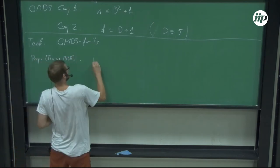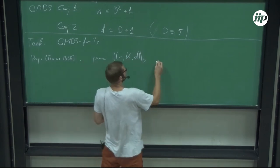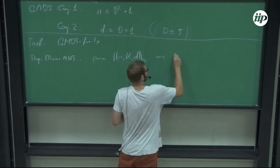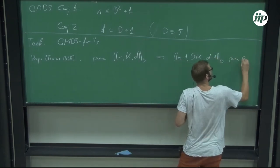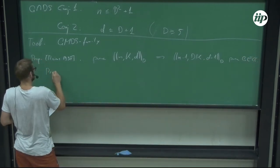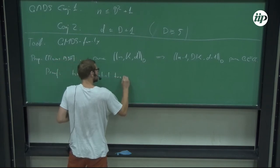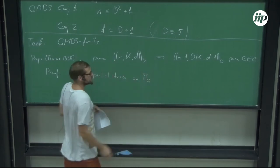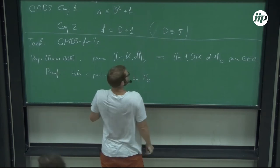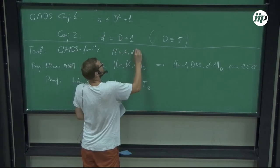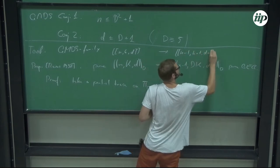Rains observed that a pure [[N, K, d]]_D code immediately implies an [[N−1, K, d, D−1]] pure quantum error correcting code. The proof is somewhat involved but basically amounts to taking a partial trace on the projector π_Q onto the code space: tracing out one party gives an [[N−1, D·K, d−1]] code. If K is an integer power of D this looks nicer: [[n, k, d]] goes to [[n−1, k+1, d−1]].